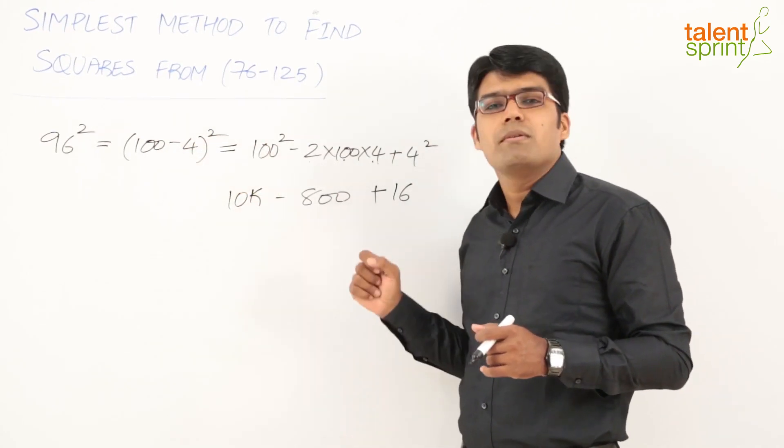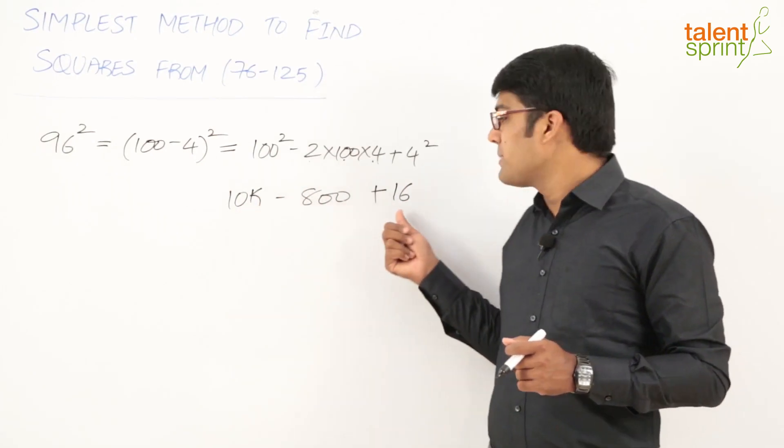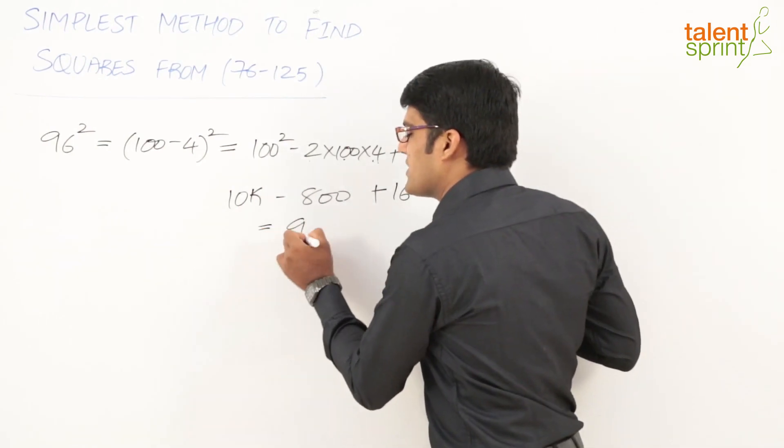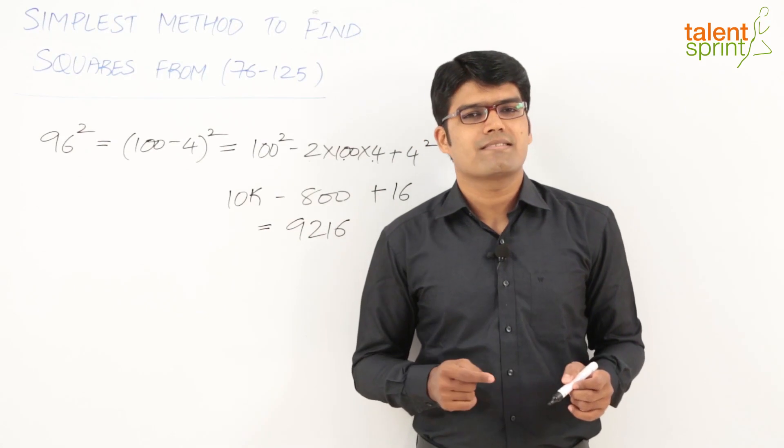Now simplify this part: 10,000 - 800 = 9,200 + 16 = 9,216. So the final answer for this question is 9,216. That is, 96² = 9,216.